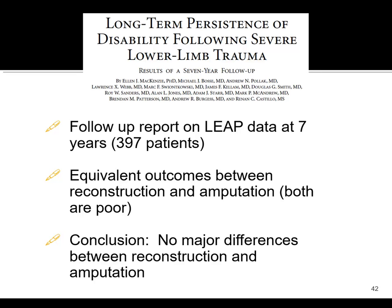That patient may need an amputation, but usually not right when they come in. If it's at all reasonable and possible, you save the limb, then make a determination in that first week or so — is this going to go south or go well? From what we know from the LEAP study, I don't think it's fair to say all these patients are better off with a BKA. Getting a BKA and a prosthesis is not that much better than reconstruction.